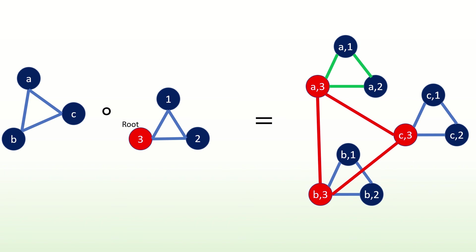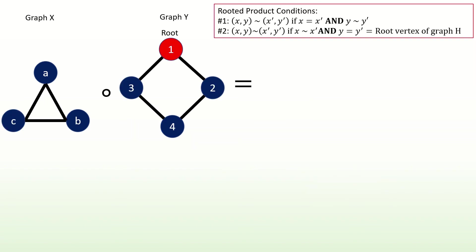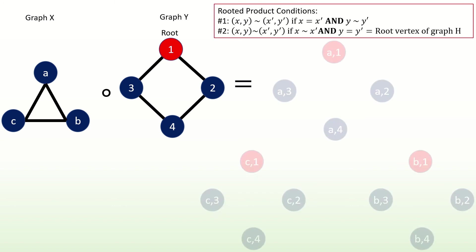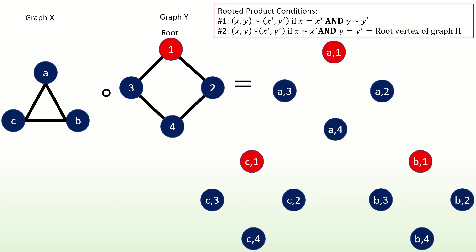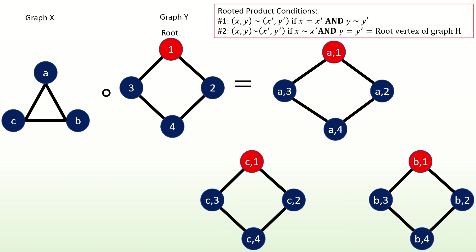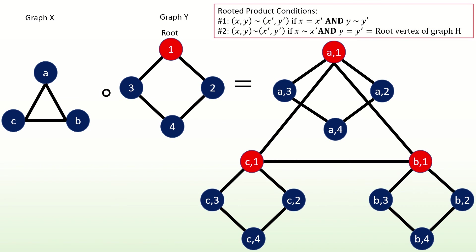Let's move on to another example which will demonstrate another property of rooted products. Let's find the rooted product of these two cycle graphs, x and y, where graph y has root vertex 1. First, find the vertex set. Next, find the adjacencies that come from the first adjacency condition — these will produce our copies of graph y. Then find the adjacencies that come from the second adjacency condition — these will produce our single copy of graph x. Notice that this graph does not contain a Hamiltonian cycle, even though its input graphs did contain Hamiltonian cycles.